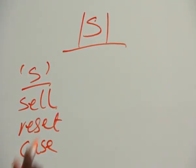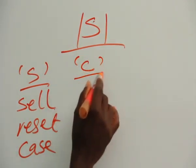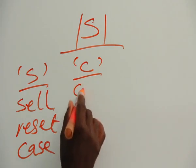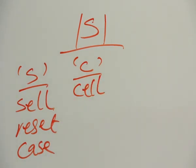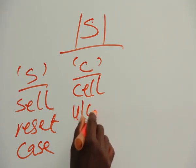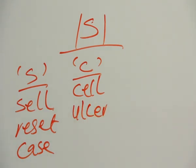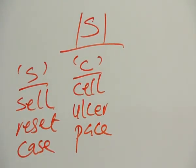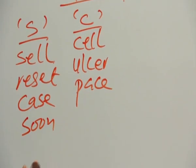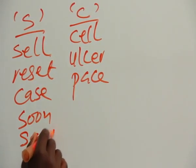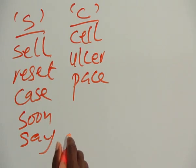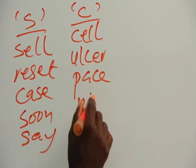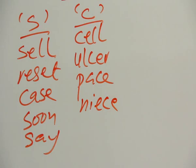Any other spelling? Yes. We have 'cell' — so now it's exactly the same way at least, but of course meaning different words. It also appears initially as in 'also', and then we have at the end 'pace'. We can add more words here: 'soon', 'save'. And we can add here 'nice'.